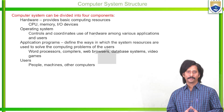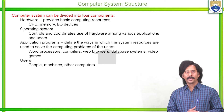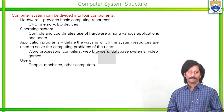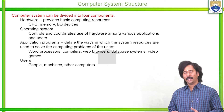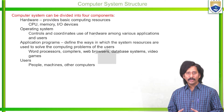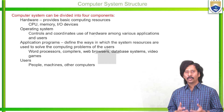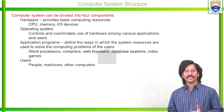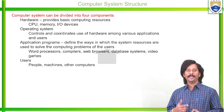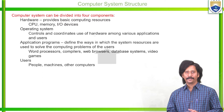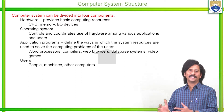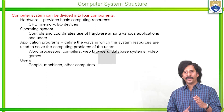Hardware provides basic computing resources. Each and every application must be executed with the help of some basic resources: the processor (CPU), memory — both primary and secondary — and some basic input/output devices. Combined together, we call these hardware. The major role of hardware is to provide basic computing resources. Then comes the operating system, which acts as an interface between the user and the computer hardware.